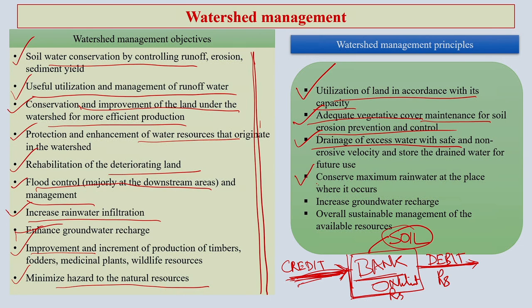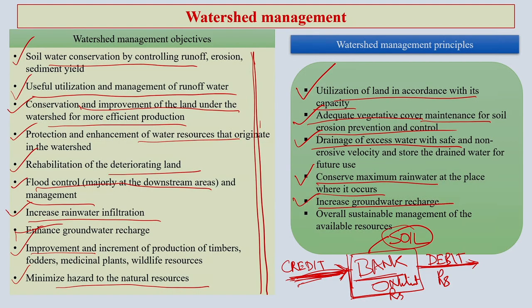In some places in India we get more water than is actually required due to heavy rain. That extra amount of water flowing through the watershed should be stored somewhere so that when there is no rain, it can be utilized for another crop. Conserve maximum rainwater in situ — at the place where it occurs — to retain moisture in that particular area. Increased groundwater recharge is essential for sustainable water management. Overall, sustainable management of available resources in the watershed is the basic principle for better watershed management.